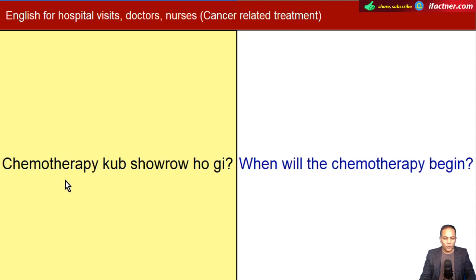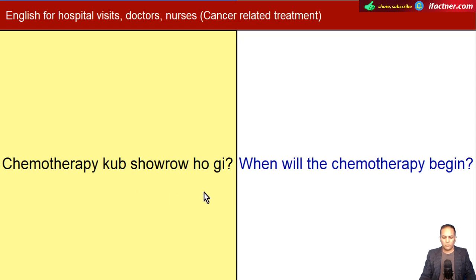Chemotherapy kab shuru ho gi? Chemo zyada tar dhua (drip) hoti hai jo kay maris ko lagai jati hai, jis ke zariye body mein jitne bhi cancer ke cells hon, unko khatam karne ki koshish ki jati hai. When will the chemotherapy begin or start?